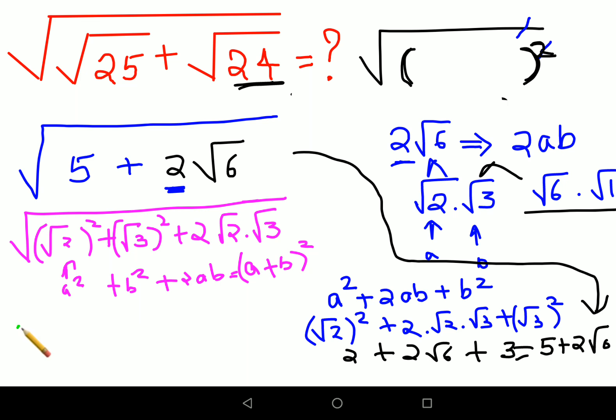So here now your entire root looks like what is your a? a is nothing but root 2 plus root 3 the whole square, right? So I can write it over here also root 2 plus root 3 the whole square